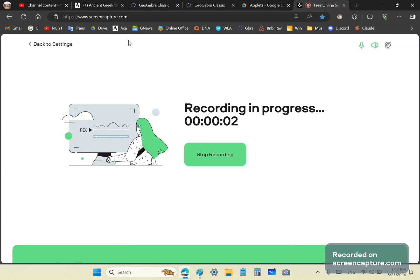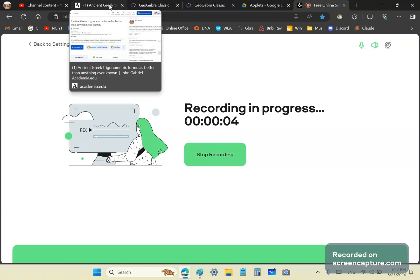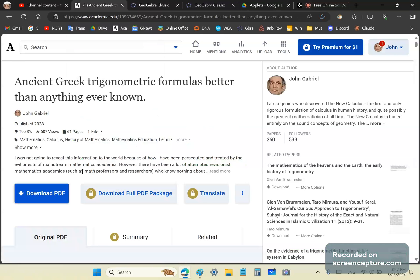Greetings and welcome to my new calculus channel. Once again my name is John Gabriel. I was asked some time ago what this article is about: ancient Greek trigonometric formulas better than anything ever known. It's gone viral at 670 years.